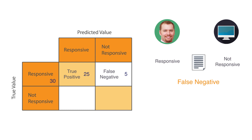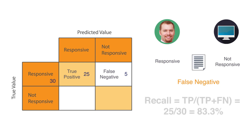So we now have the components for our recall measure. We have 30 total actual responsive documents, but the machine only found 25 of those. So recall is 25 divided by 30, or 83.3%. In this example, our machine has found 83.3% of all responsive documents.